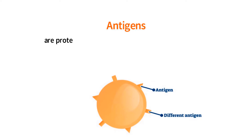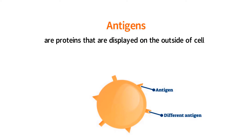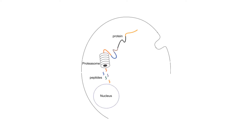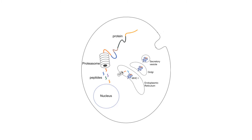Antigens are proteins that are displayed on the outside of cells. All nucleated cells in the human body present antigens on the outside of their cell membranes. For a cell to be able to present an antigen, the antigen is first produced inside of the cell, then while still inside the cell, the antigen is loaded onto another protein.